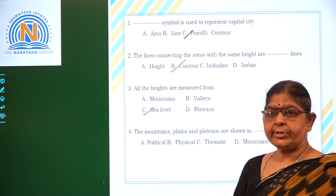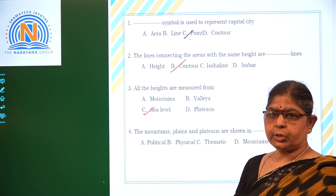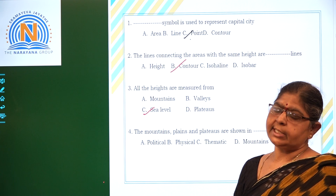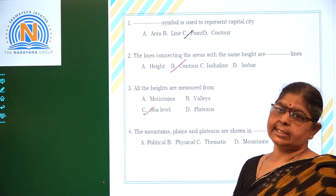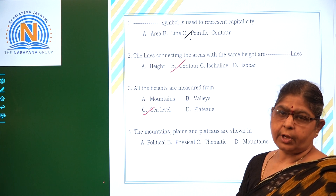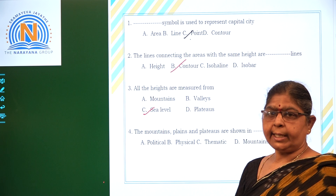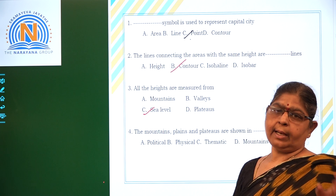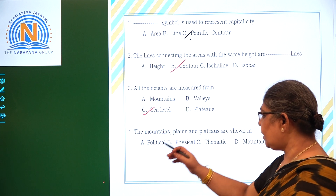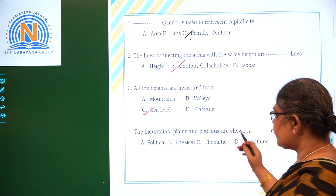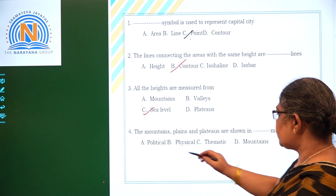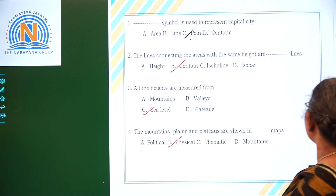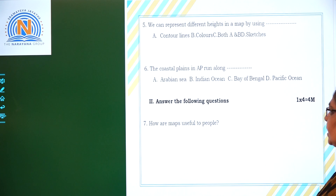The physical map shows all the relief features like mountains, plains, and plateaus. The thematic map shows only a particular subject. So mountains, plains, and plateaus are shown in the physical map.